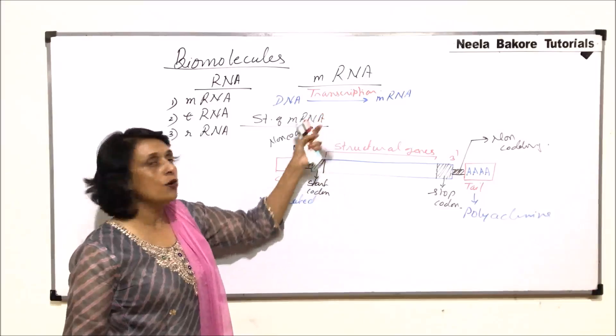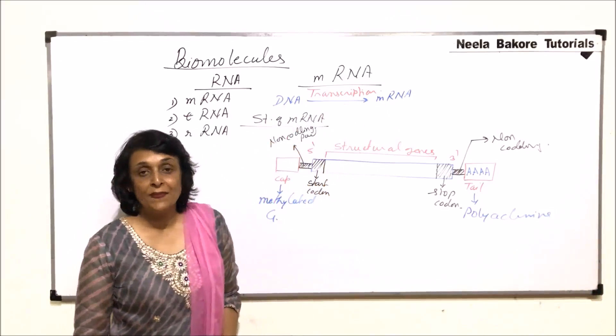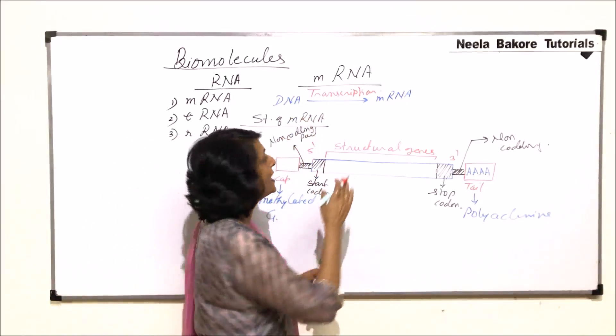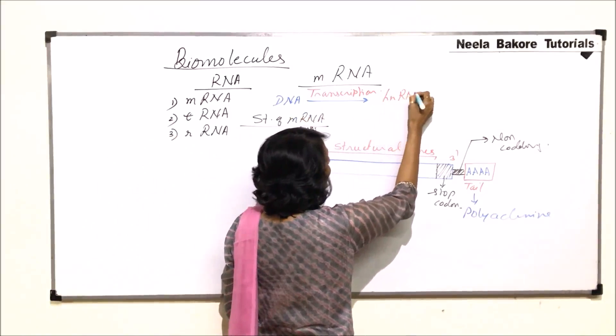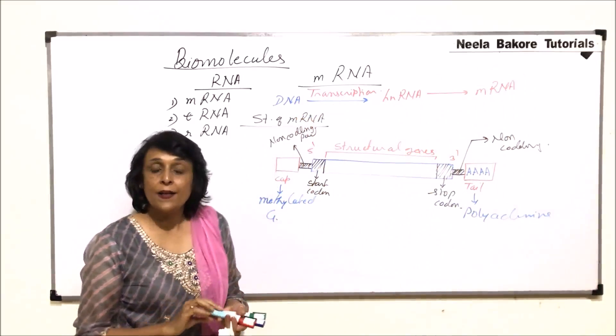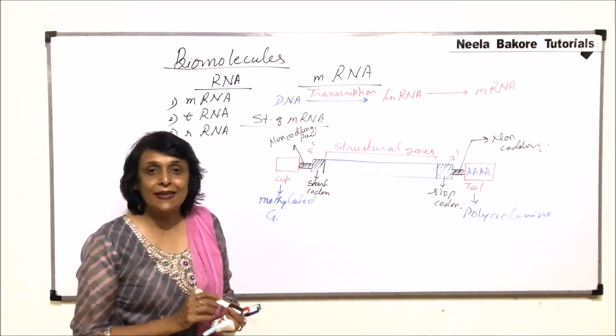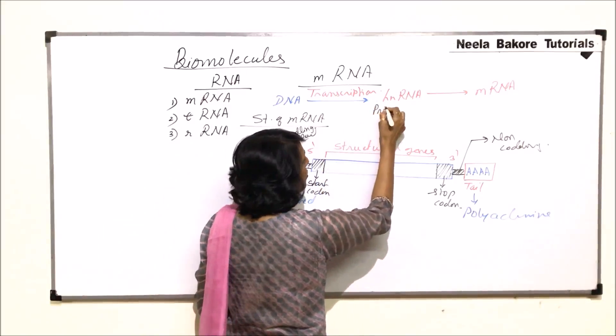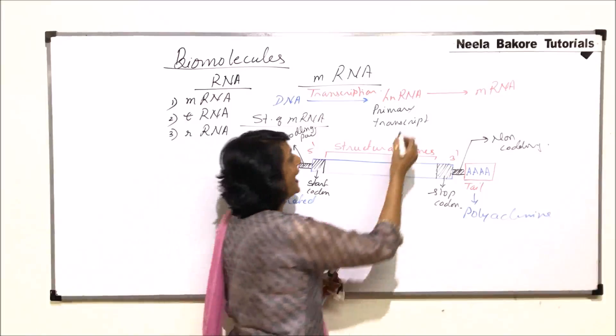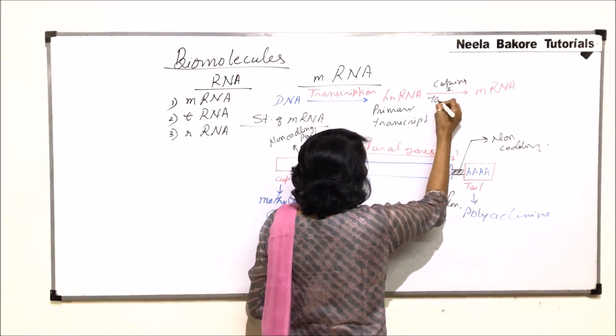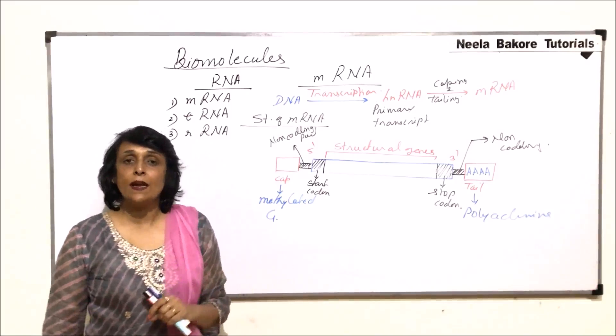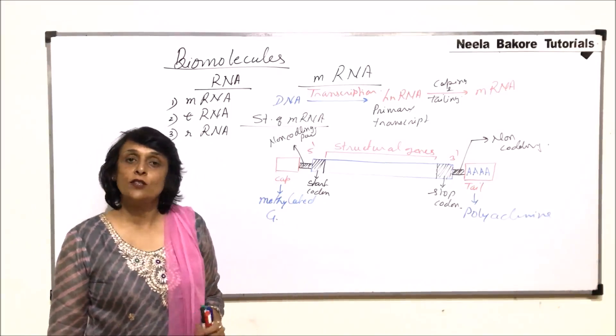So when we say transcription we normally in single line we say mRNA formation from DNA. But actually mRNA is not directly formed. There is one more molecule which is formed. So this thing can be changed a little bit. We can write it as hnRNA and then hnRNA to mRNA. This entire process is transcription. But the first structure which is formed is not directly mRNA. There is something else. And that is why hnRNA is known as primary transcript. And then it undergoes capping and tailing. So here is capping and tailing and that is how we get our functional mRNA. And these are the various parts. In the next segment we will take up another RNA that is tRNA or transfer RNA.